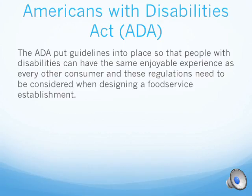The ADA, or Americans with Disabilities Act, put guidelines into place so that people with disabilities can have the same enjoyable experience as every other consumer, and these regulations need to be considered when designing a food service establishment. It also does not allow employers to discriminate against employees with disabilities if they are fully qualified for the job. Because of the ADA, people need to make wider spaces, have ramps, have bathrooms that are easily accessible with wheelchairs, wider doors, and grab bars with shorter tables and countertops. Overall, there must be no obstructions in pathway areas — wide enough, preferably 42 inches, for a person with wheelchair access to get through easily — and everything with easy access, which would include lowering countertops, sinks, and soap dispensers. The ADA has an entire checklist for specifics to accommodate disabled persons.